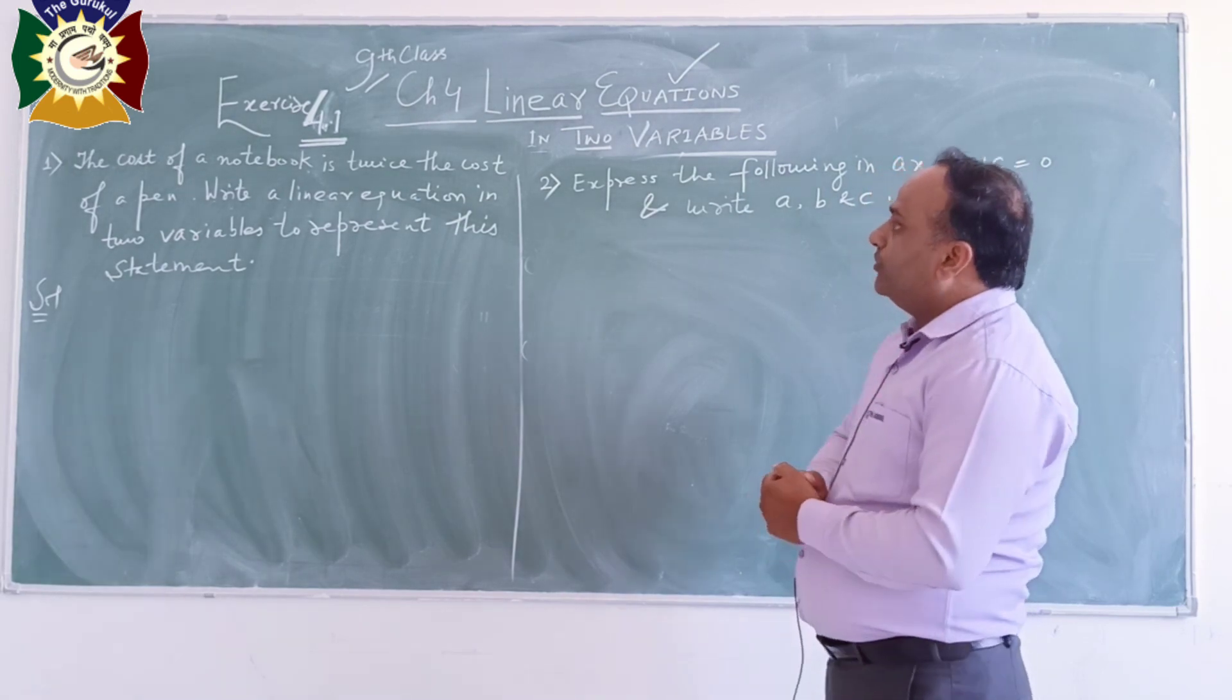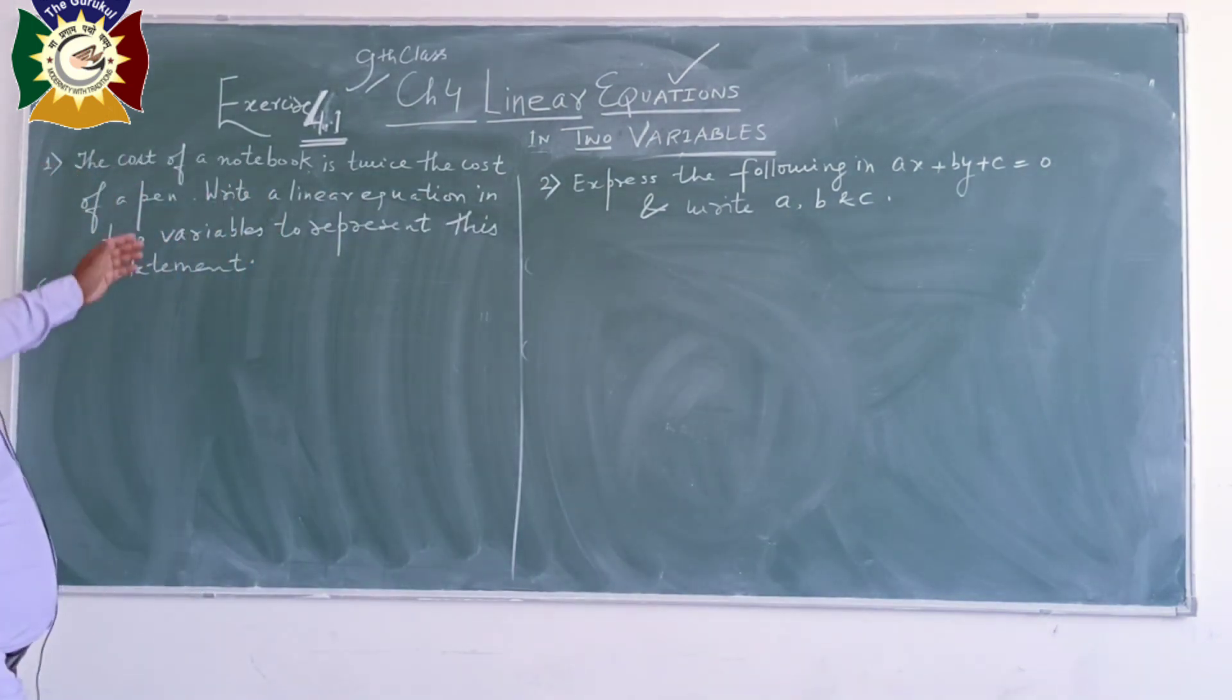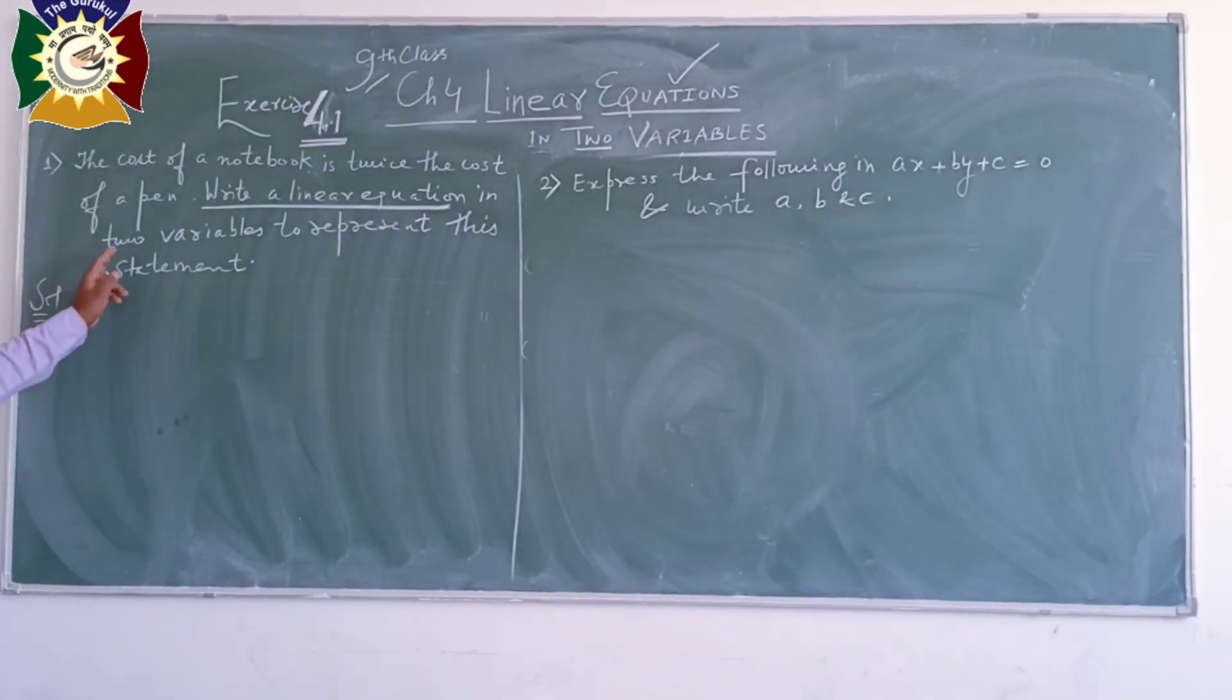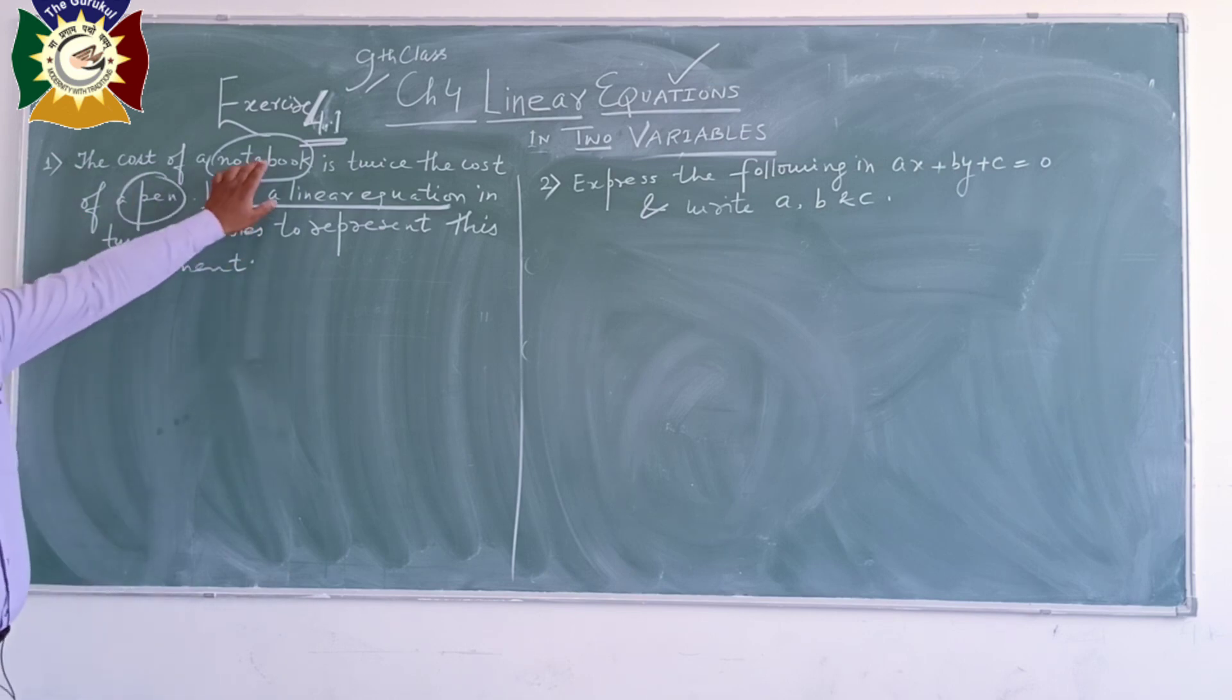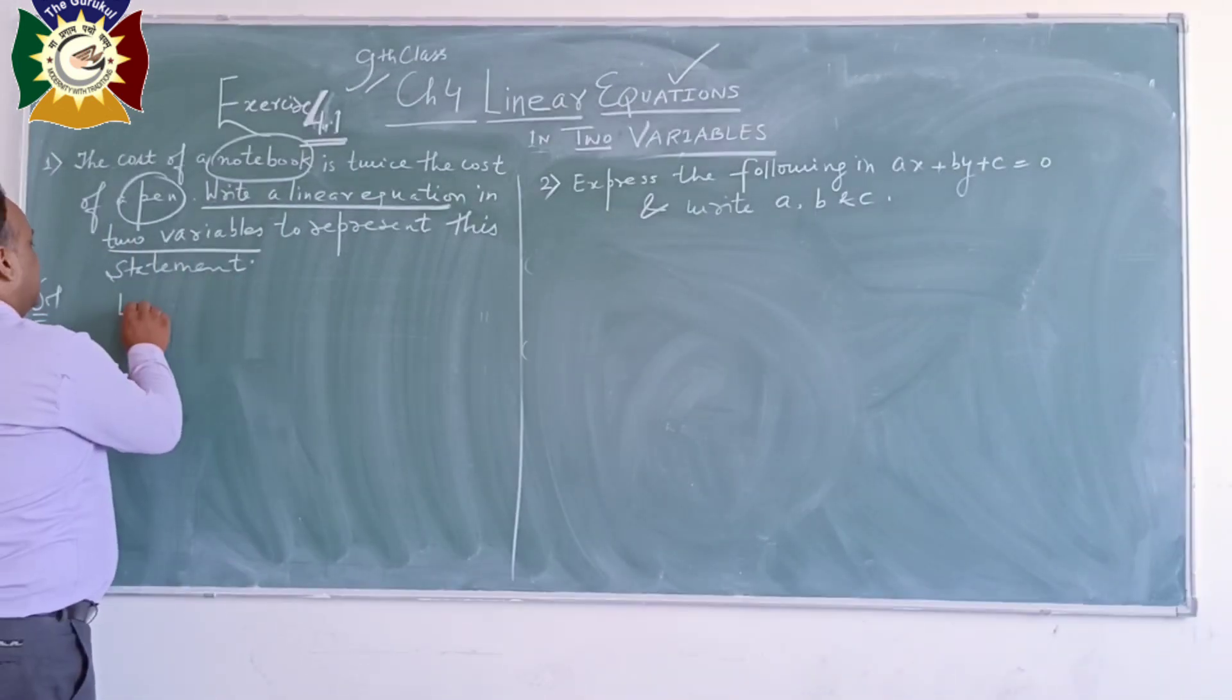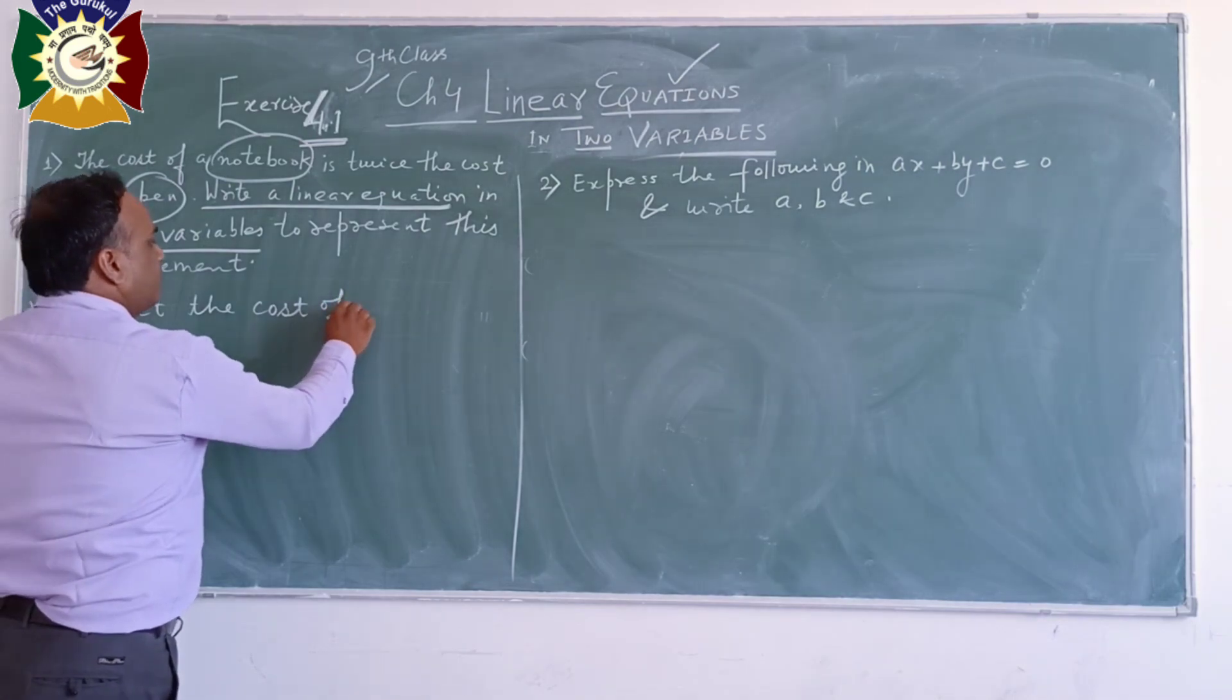You can see on the board, chapter four, linear equation in two variables. Here we go. The first question: the cost of a notebook is twice the cost of a pen. Write a linear equation in two variables to represent this statement. What are the things here? Notebook and pen. In two variables we have two variables, so we suppose variable for notebook and variable for pen.